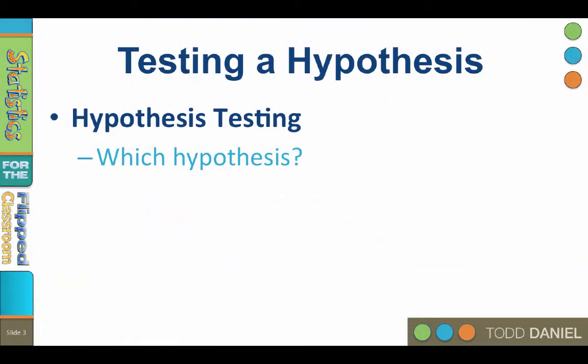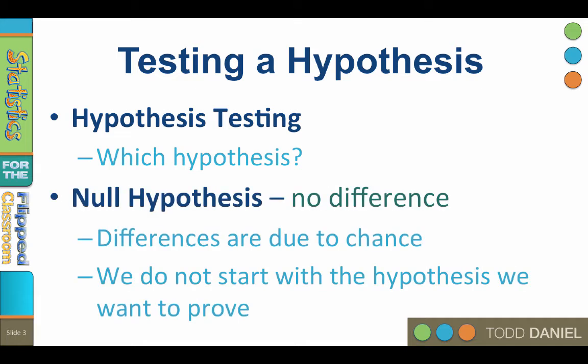I'm going to teach you about hypothesis testing. That means we develop a hypothesis and we test it. What makes this part of statistics difficult is deciding what hypothesis to test. Many students are surprised to learn that we do not begin with a hypothesis that we would like to prove, but rather we begin with a hypothesis that nothing happened. The first hypothesis we actually test is the null hypothesis, which says that no differences exist — there was no effect, and the best explanation is chance.